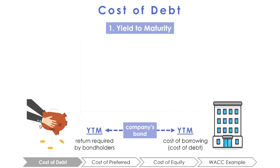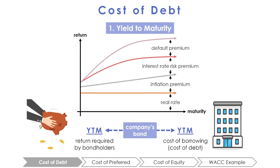Of course, YTM differs according to the term of the bond, so if possible, choose a bond with the term length or maturity that matches the timing of the project that you are applying WACC to.